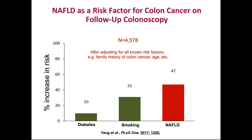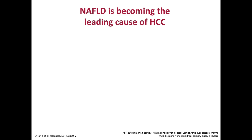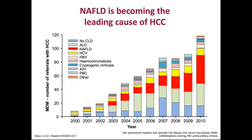This slide looks at the frequency of hepatocellular carcinoma and the different etiologies of liver disease leading to it. Hepatocellular carcinoma is the most rapidly increasing cancer in the United States. The red sections of each bar represent the proportion of patients in each year with HCC who had NAFLD as the cause of their liver disease. It's estimated that currently about 50% of patients with HCC have non-alcoholic fatty liver disease as the basis of their chronic liver disease. It is now the most frequent liver disease leading to hepatocellular carcinoma.